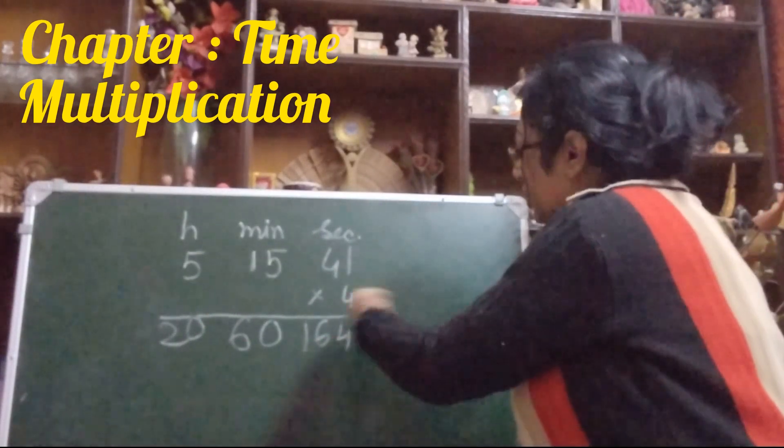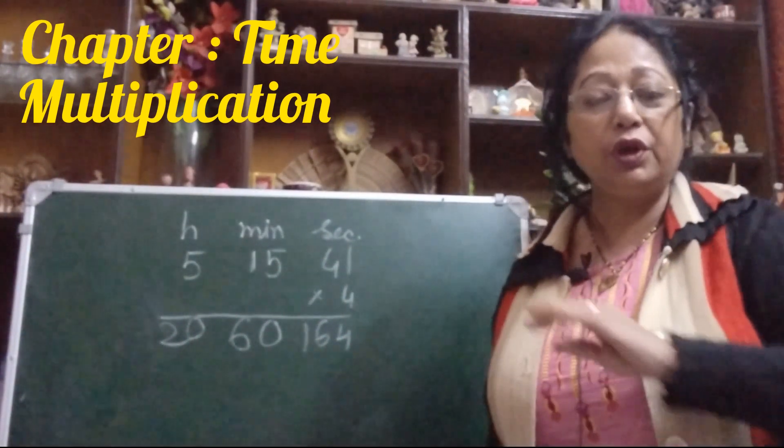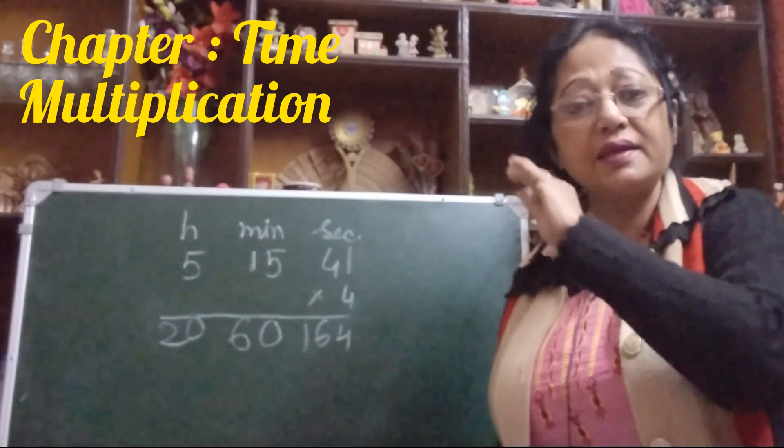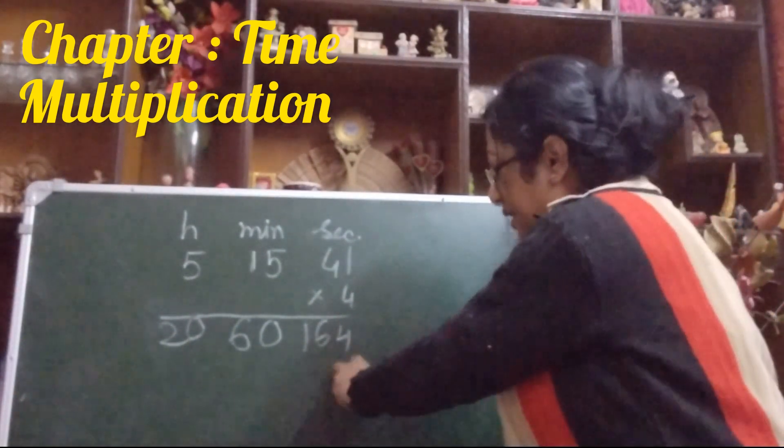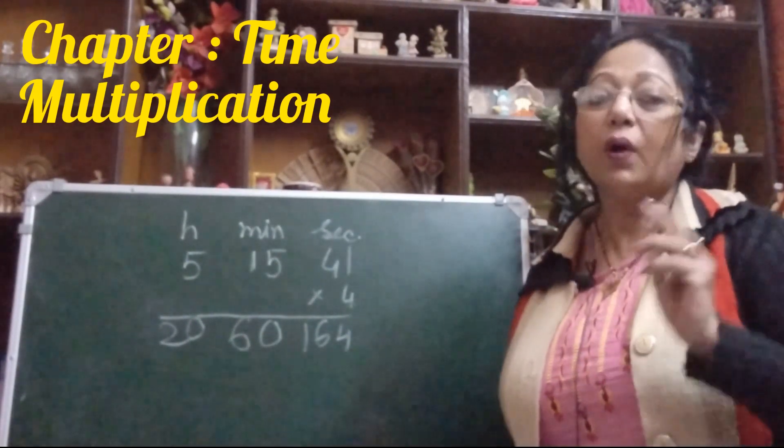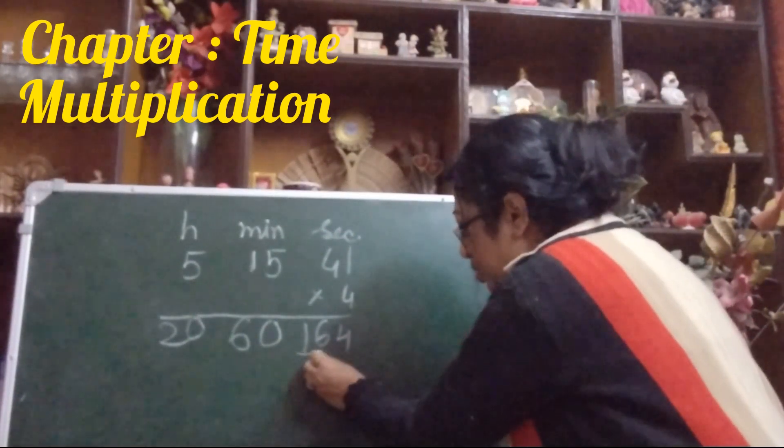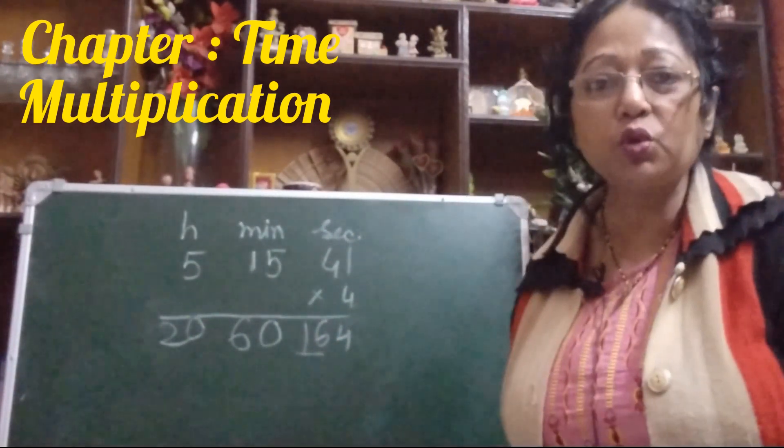So it is more than one minute, more than two minutes also. So what we will do? We will subtract, we will make this number 164 less than 60. I am telling you a trick: just listen. First you see these two digits. What is there? There is 16.